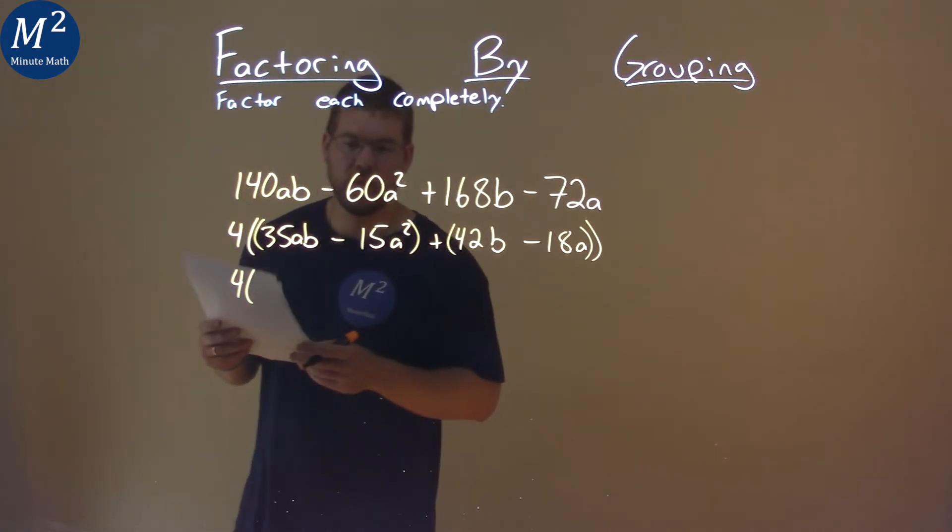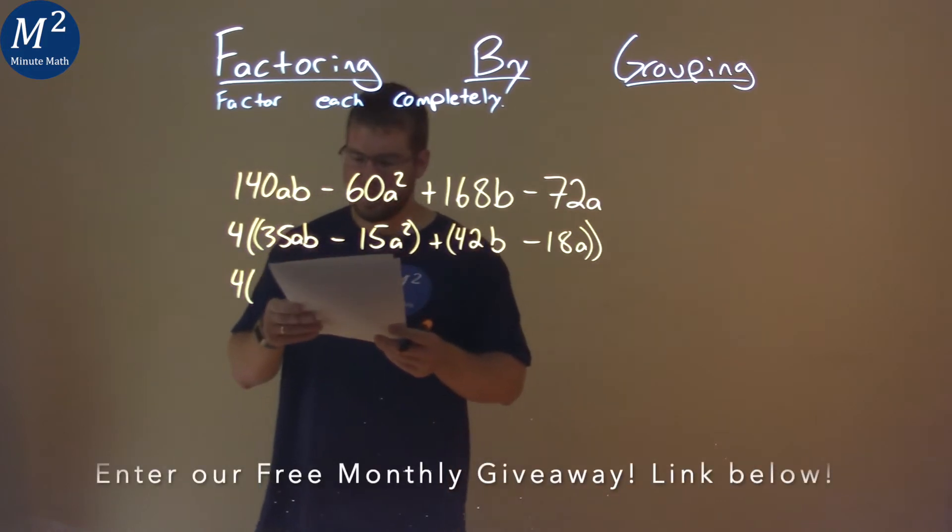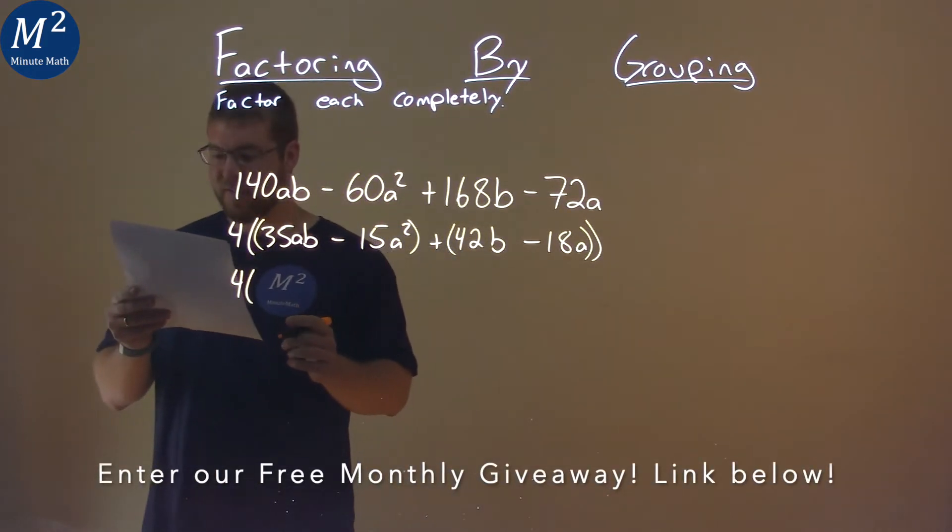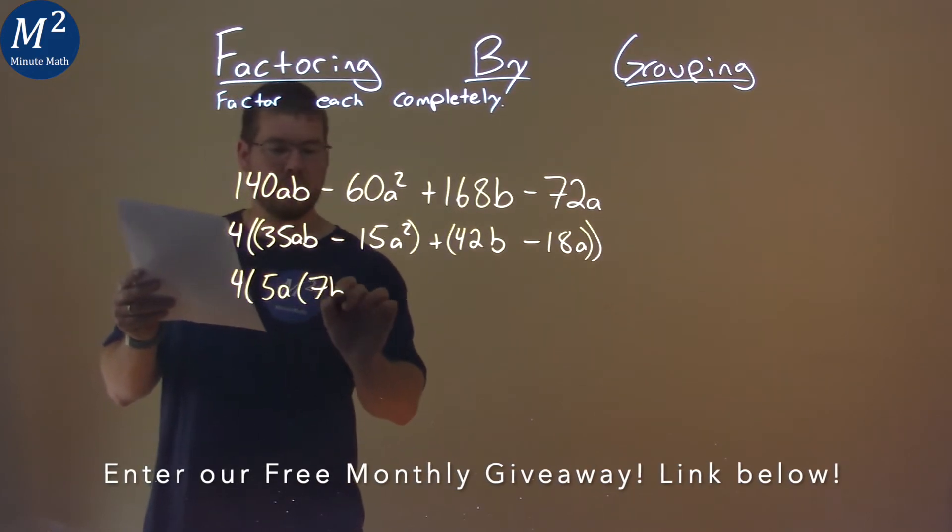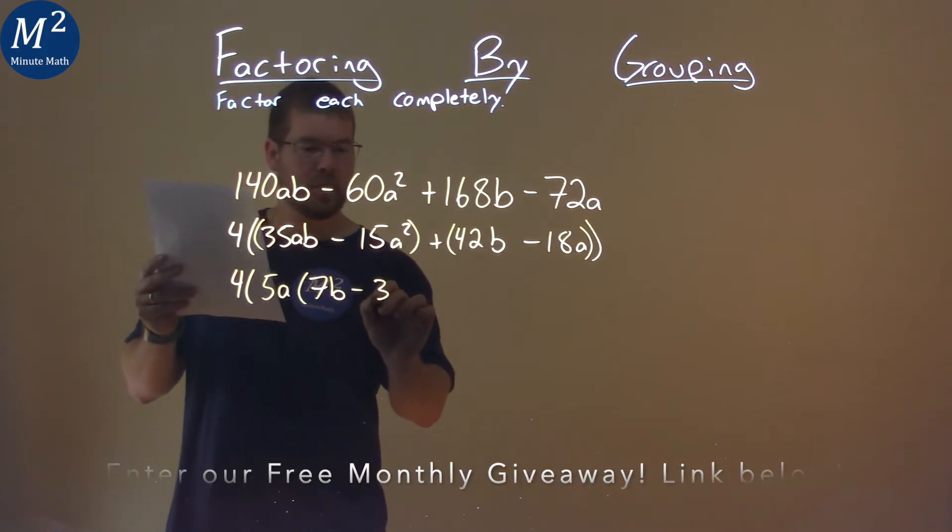What's a common term that's in 35ab and 15a squared? And that's going to be 5a. So I pull out 5a, and I'm left with 7b minus 3a.